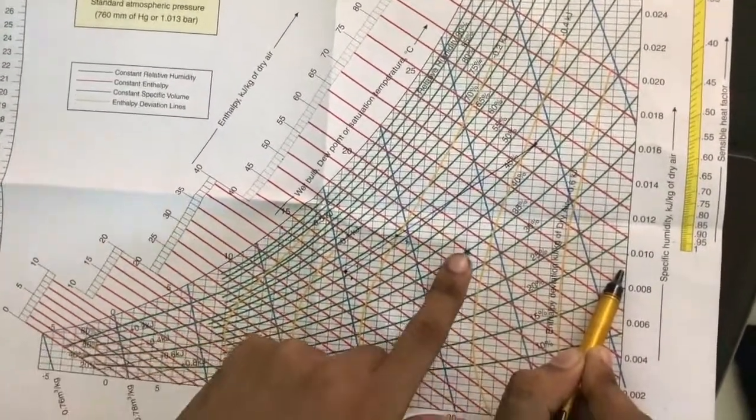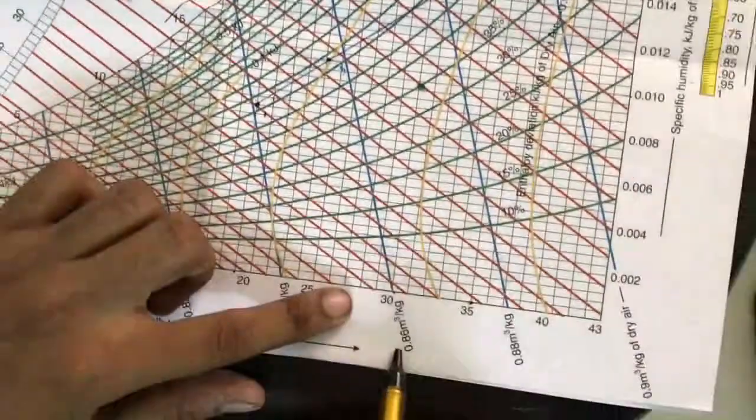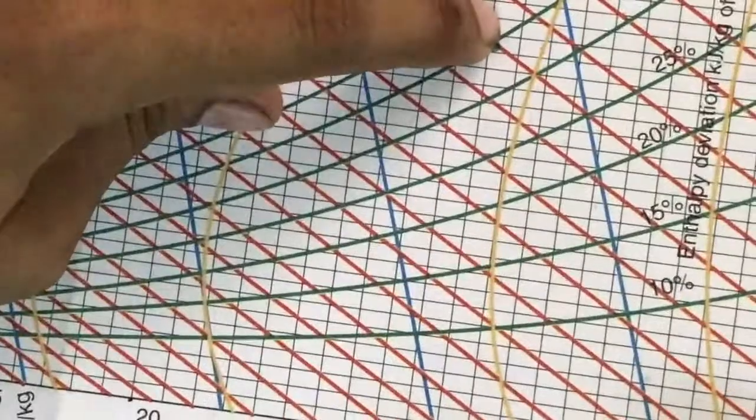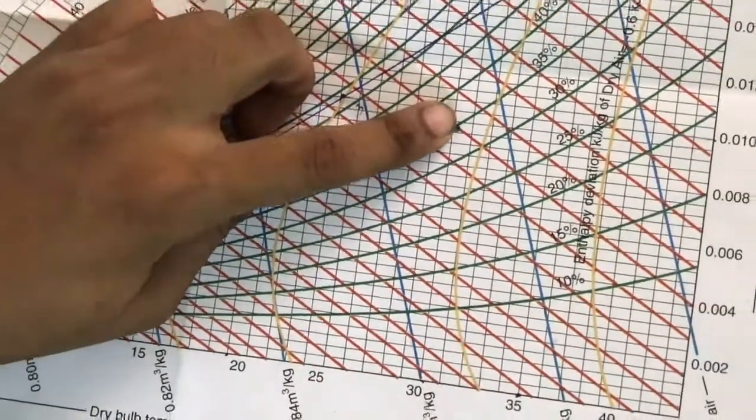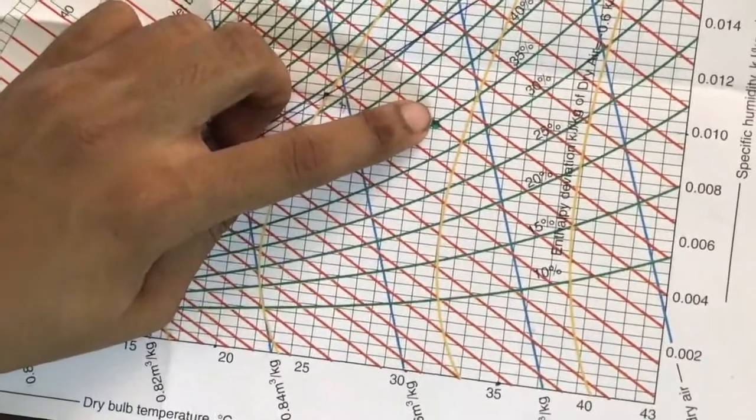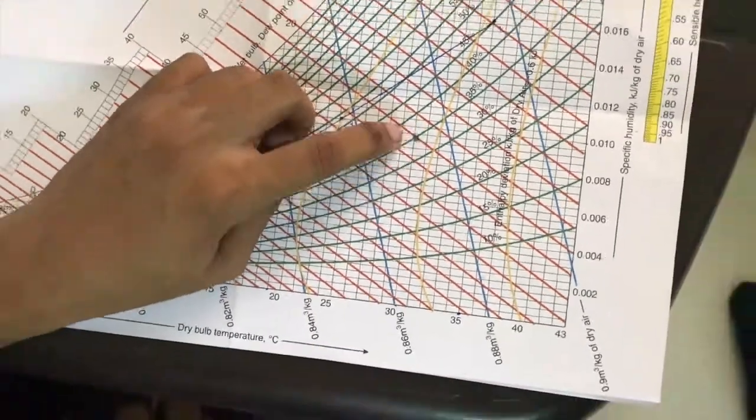Specific volume - if you are looking it is between 0.86 and 0.88. Let's take it is about three-fourths of this distance, so it's about 0.875 cubic meters per kilogram. That is the specific volume.